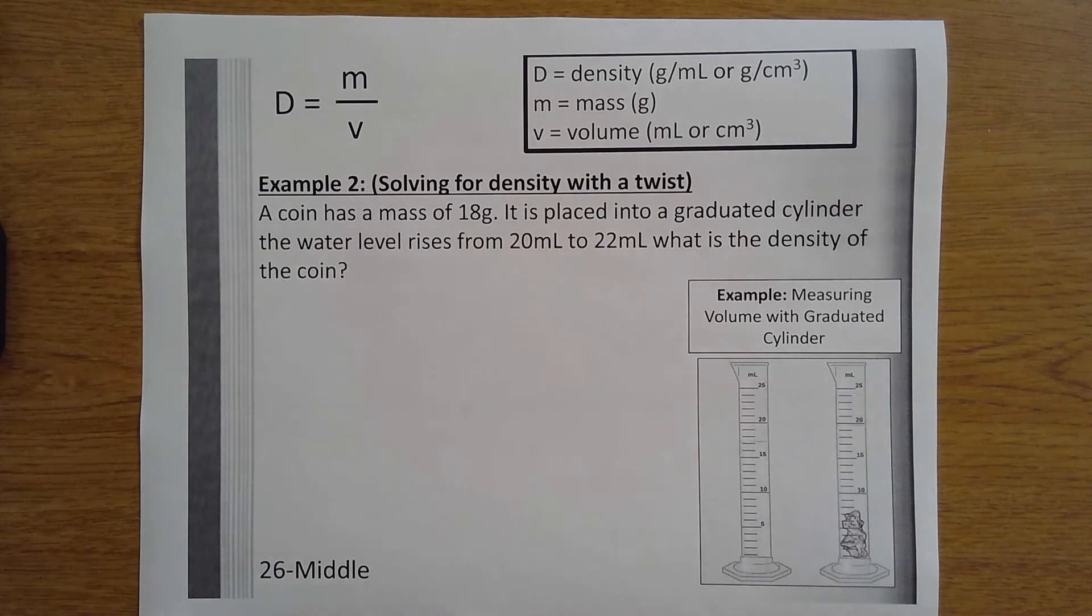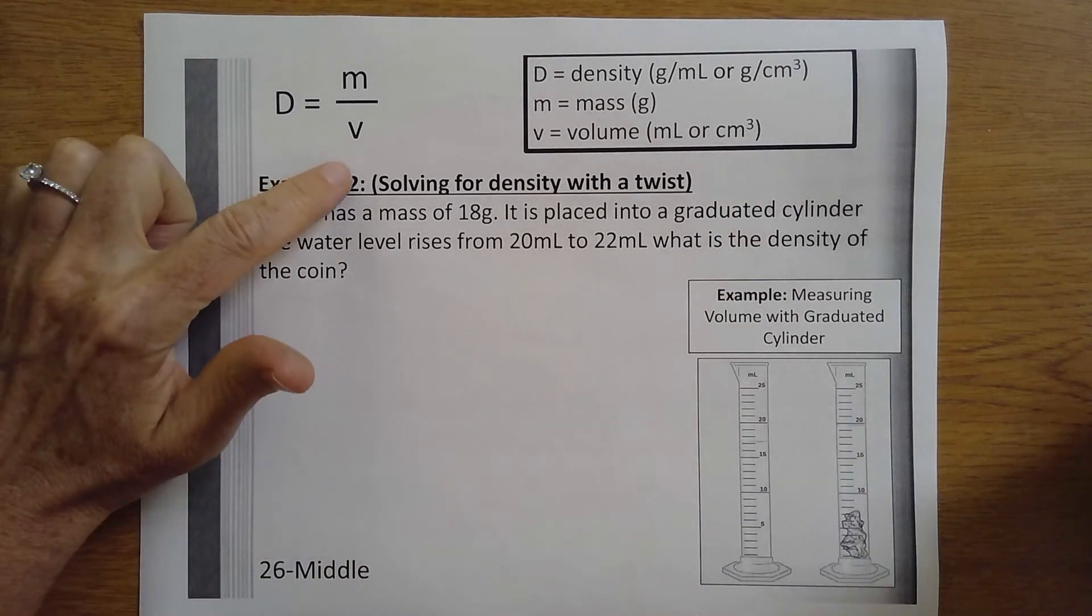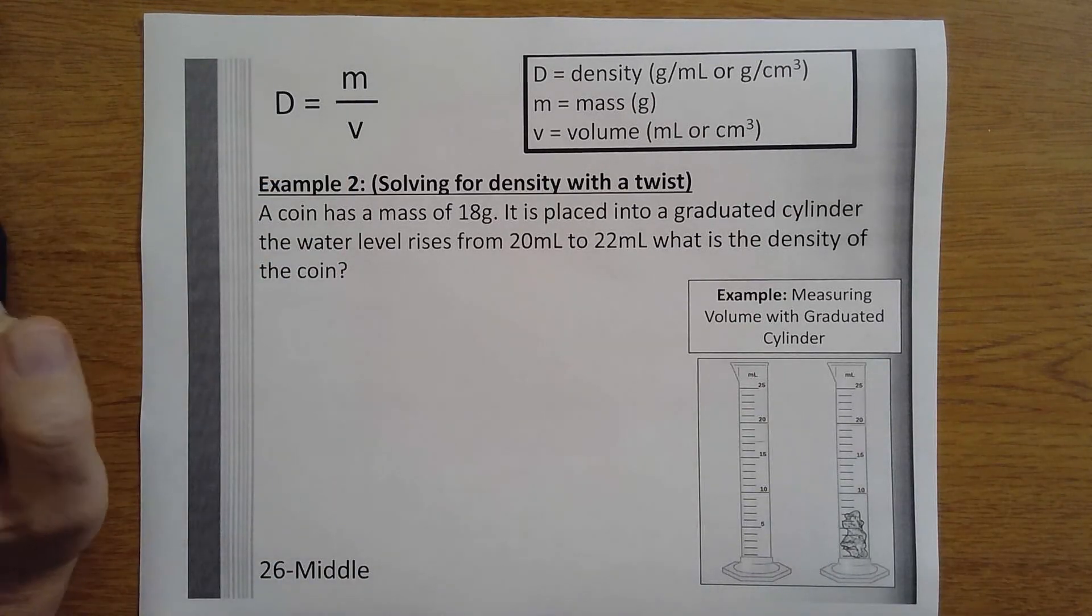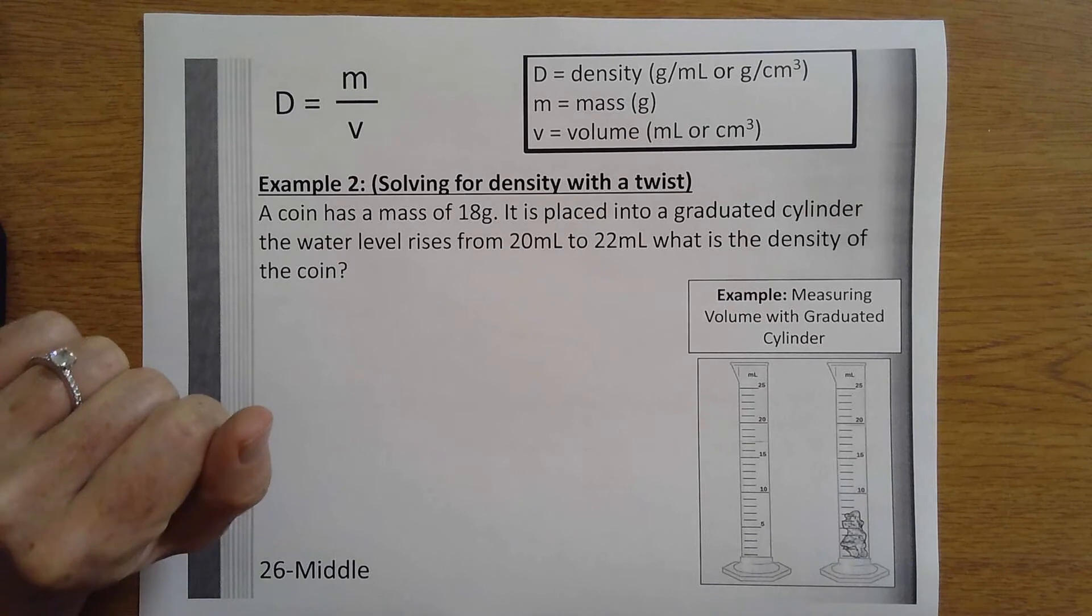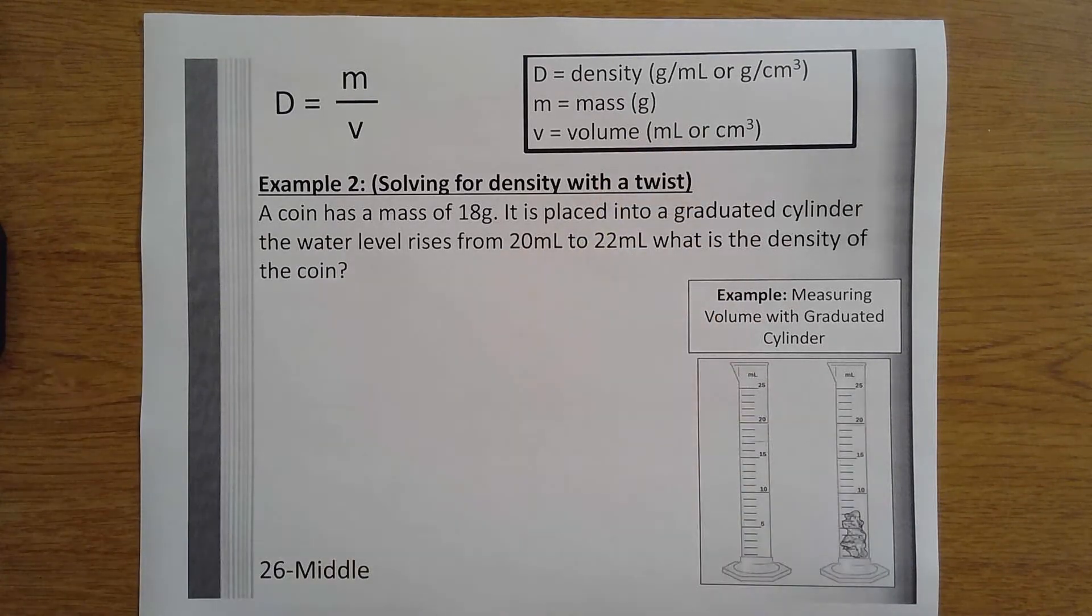The same formula is present, the same units, the same variables. D is equal to m over v, mass divided by volume, where D stands for density, and I put those units in parentheses.